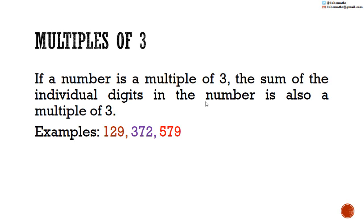The three examples are 129, 372, and 579. For 129, the sum of the individual digits — 1 plus 2 plus 9 — is equal to 12. Since 12 is a multiple of 3, we conclude that 129 is also a multiple of 3.